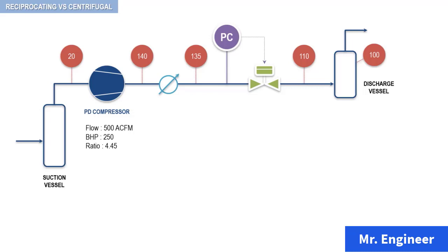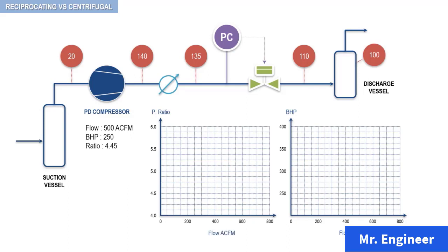Let's now plot the actual cubic feet per minute versus pressure ratio, and the actual cubic feet per minute versus brake horsepower. In this example, the actual cubic feet per minute is 500 and the pressure ratio is 4.45. So here you have your first operating point. And for the brake horsepower, we have 500 cubic feet per minute as flow and 250 brake horsepower.